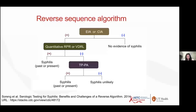In the reverse screening algorithm, if EIA is positive and RPR is negative, the lab reflexes to a TPPA. If TPPA is positive, it confirms syphilis — the RPR was a false negative. If TPPA is negative, the original EIA was a false positive and no further testing is needed. Going back to our patient: RPR was non-reactive, TPPA was positive. One possibility is early syphilis — she hasn't yet mounted an RPR response.